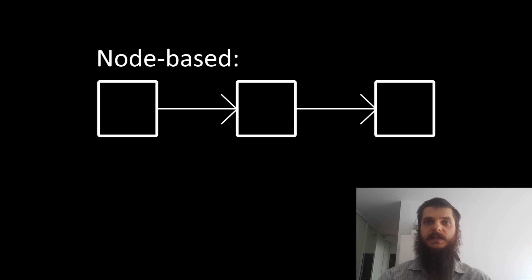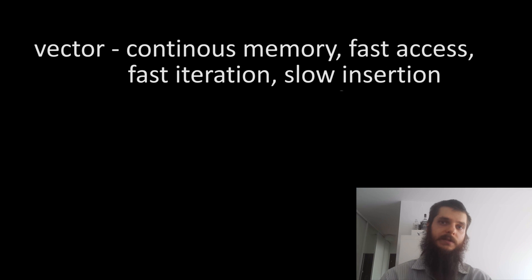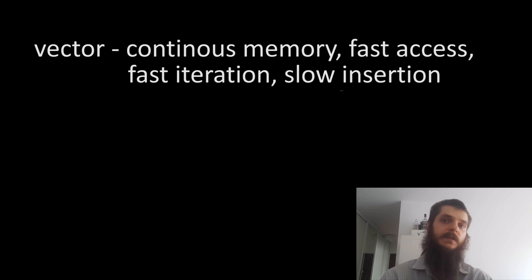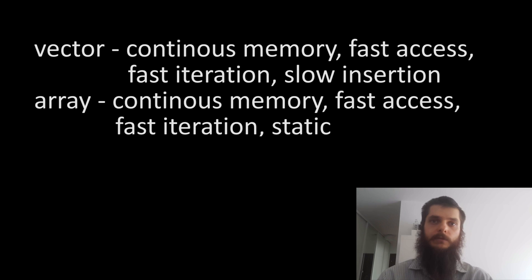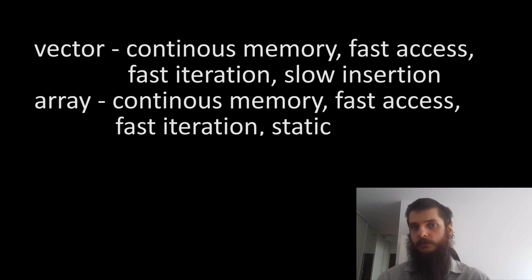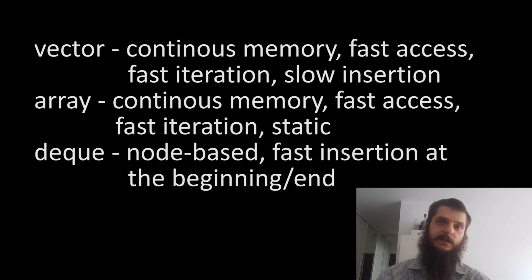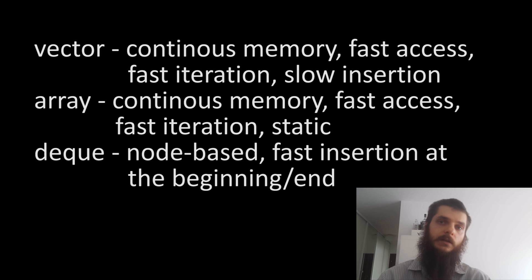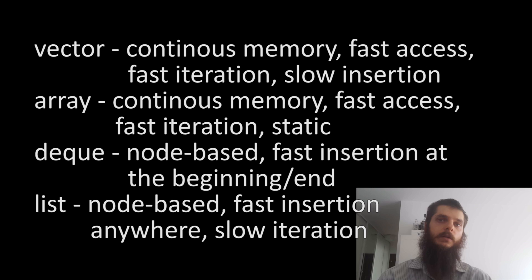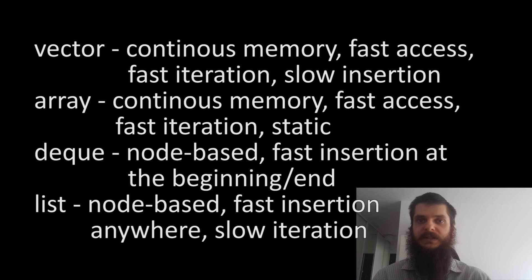To recap sequence containers: you have a vector, which stores elements in continuous memory giving fast random element access and fast iteration, but slow insertions and removals. You have an array, which also stores elements in continuous memory but is static — it cannot grow or shrink. Then you have node-based containers like a deque, optimized for fast insertions and removals at the beginning or end. And you have a list and forward list, which do insertions fast but are slow at iteration or random element access since you need to scroll through all nodes.